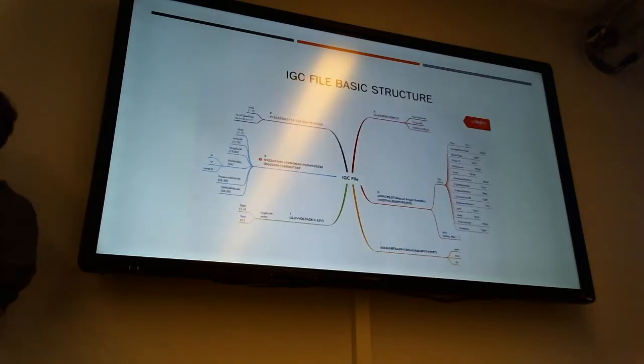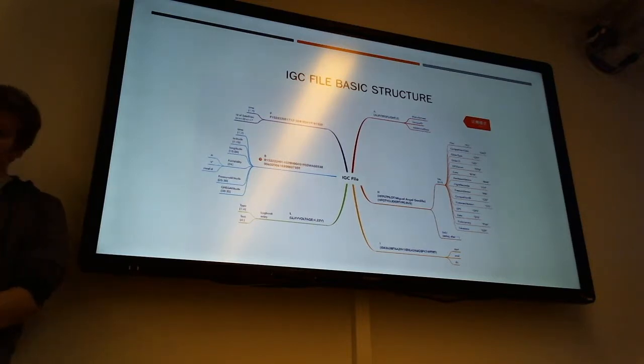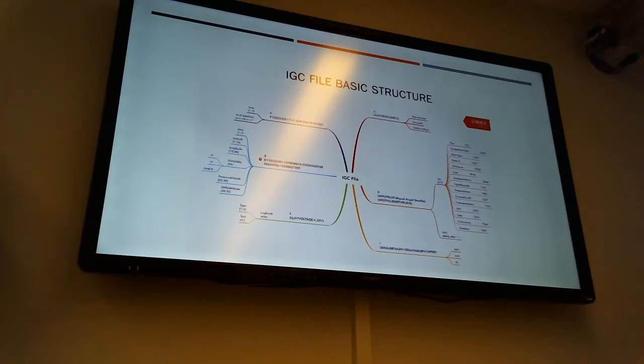So this is what the IGC file contains. It's a lot of information, everything from start point, stop point, altitude, GPS positions, everything. So this is pretty much what we use to create the data needed to fulfill the task.